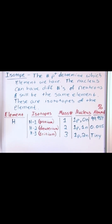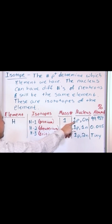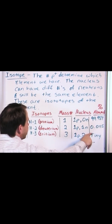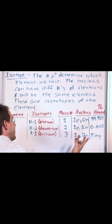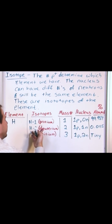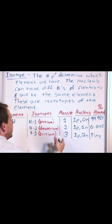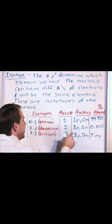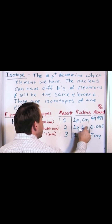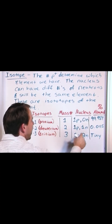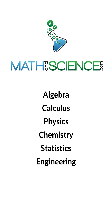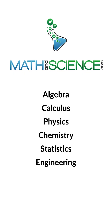So you can kind of see what's going on here. The pure version of the atom is basically almost every single atom you're going to find in nature. But every now and then, statistically, you're going to come across a deuterium atom, which we call H2, and instead of zero neutrons in a typical nucleus, we have one neutron here. Learn anything at mathandscience.com.